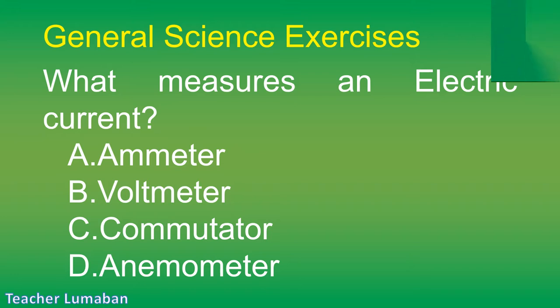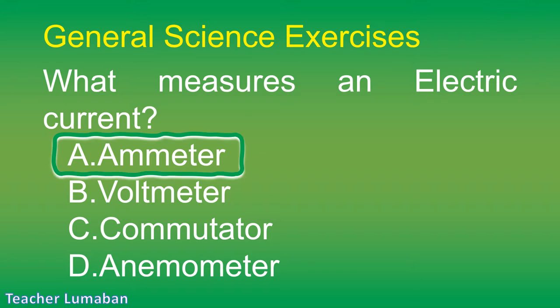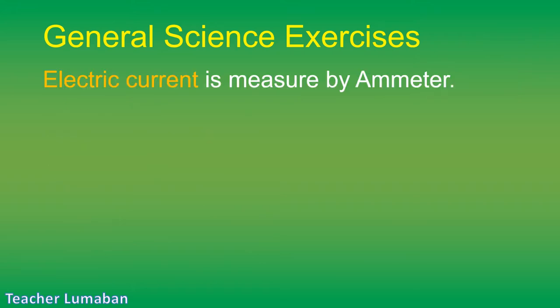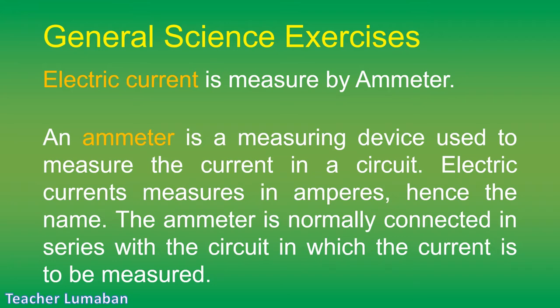The correct answer is Letter A: ammeter. Electric current is measured by an ammeter. An ammeter is a measuring device used to measure the current in a circuit. Electric current is measured in amperes, hence the name. The ammeter is normally connected in series with the circuit in which the current is to be measured.